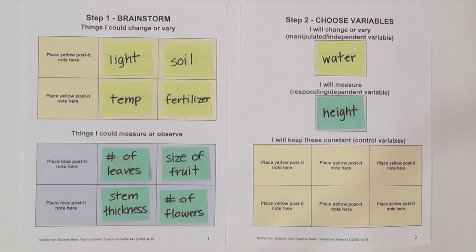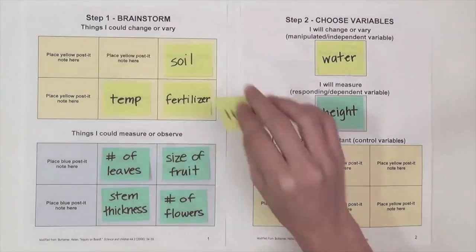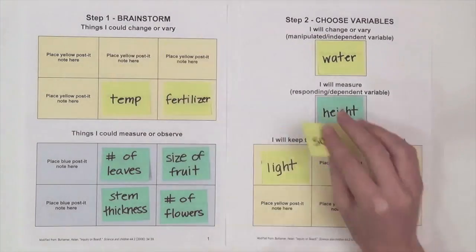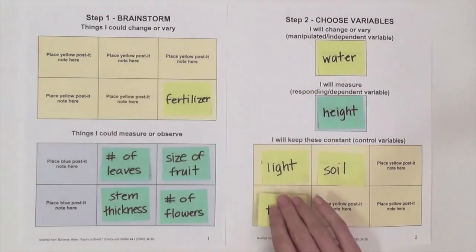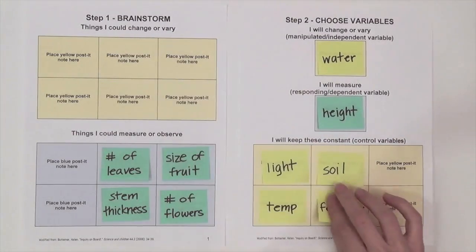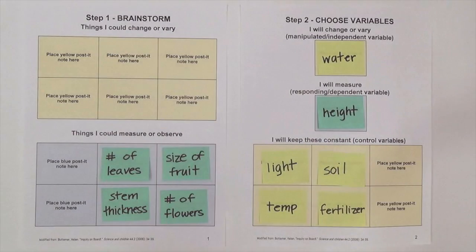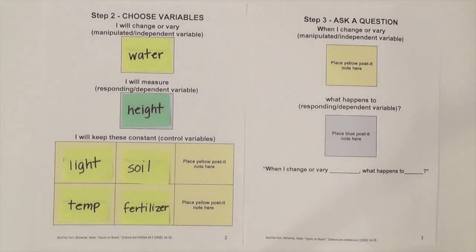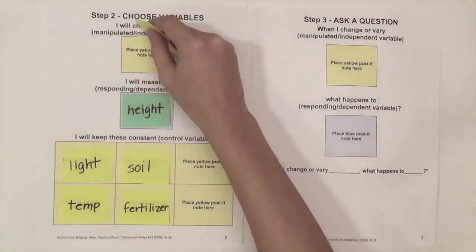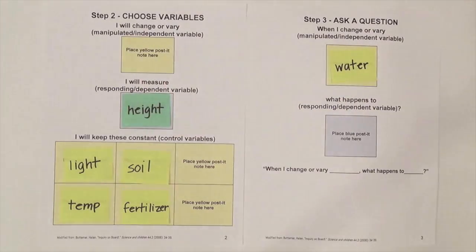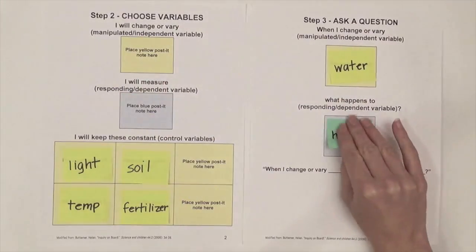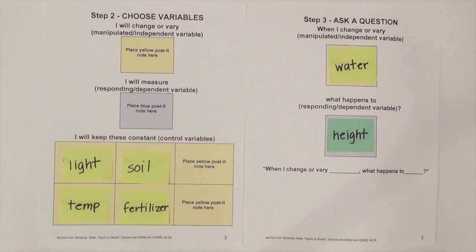Notice that the inquiry boards only allow you to choose one variable to change and one variable to measure. All the other variables have to be kept constant during the experiment. We'll use the next inquiry board to take the variables that we've chosen to ask our scientific question.